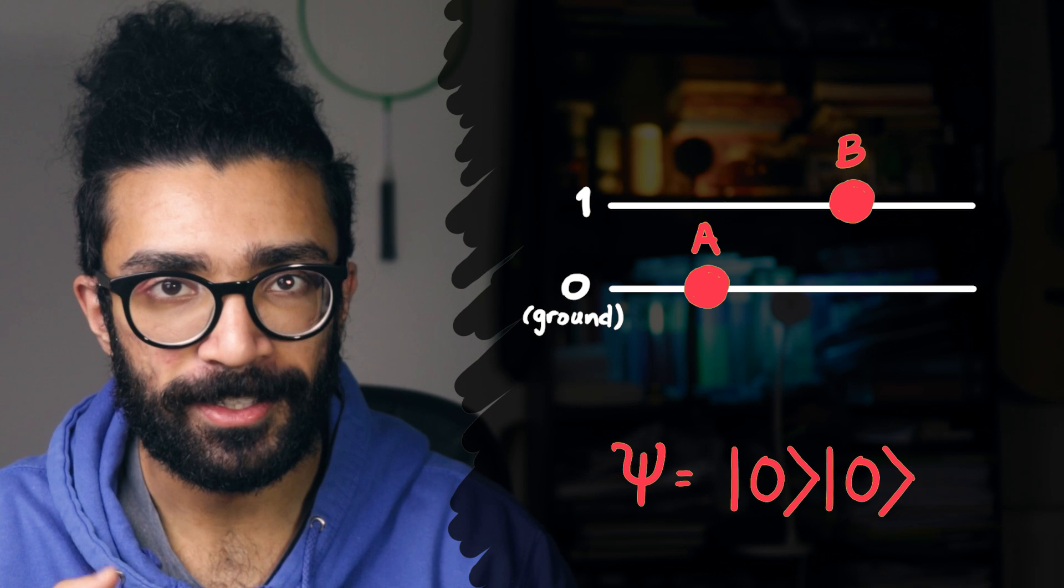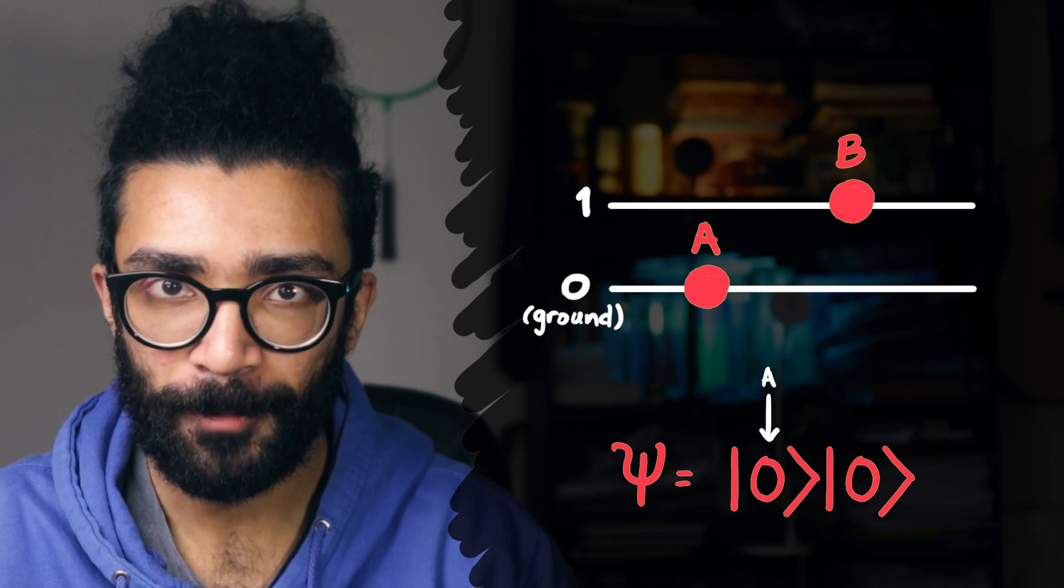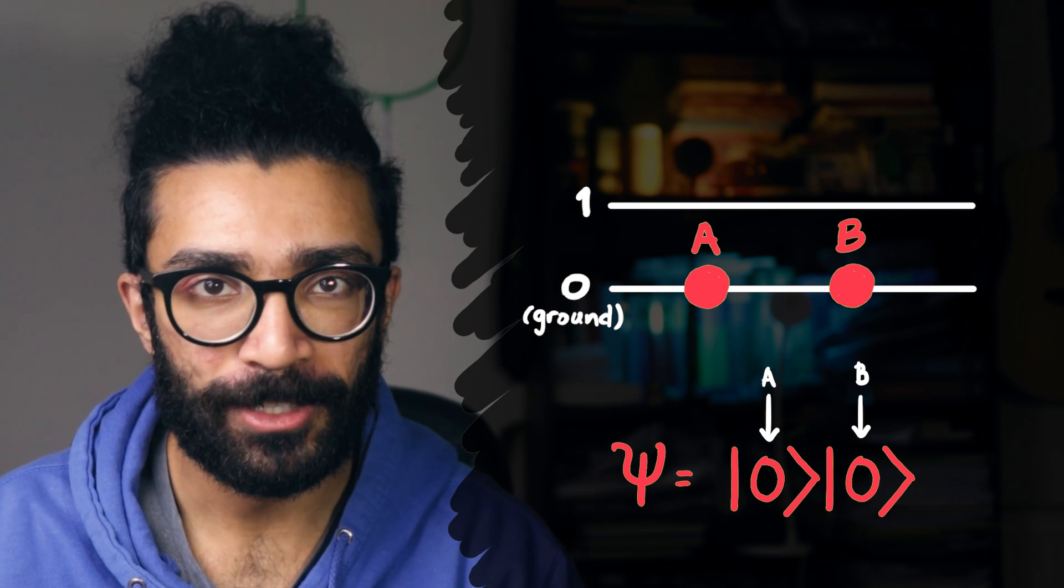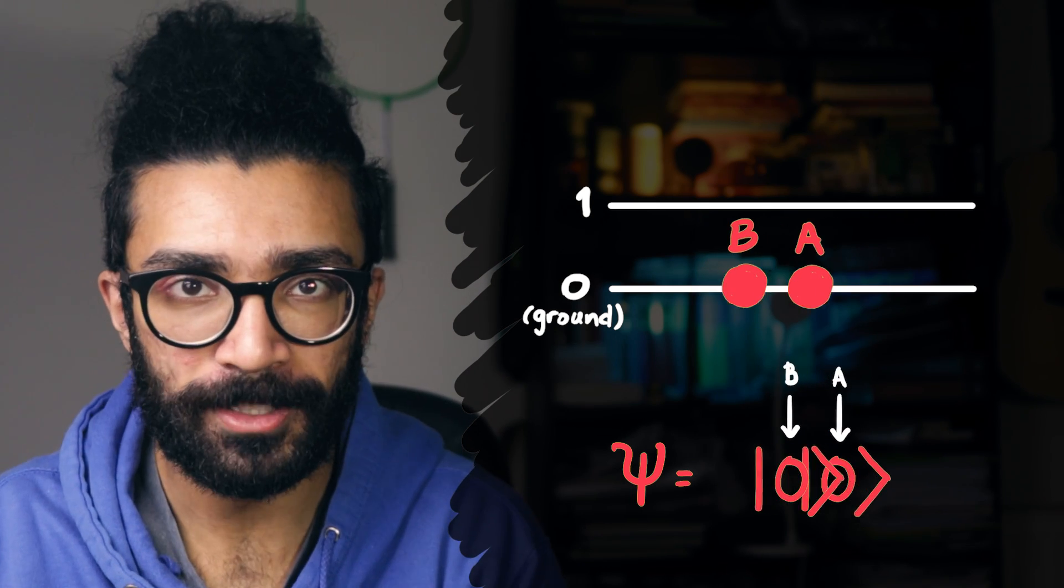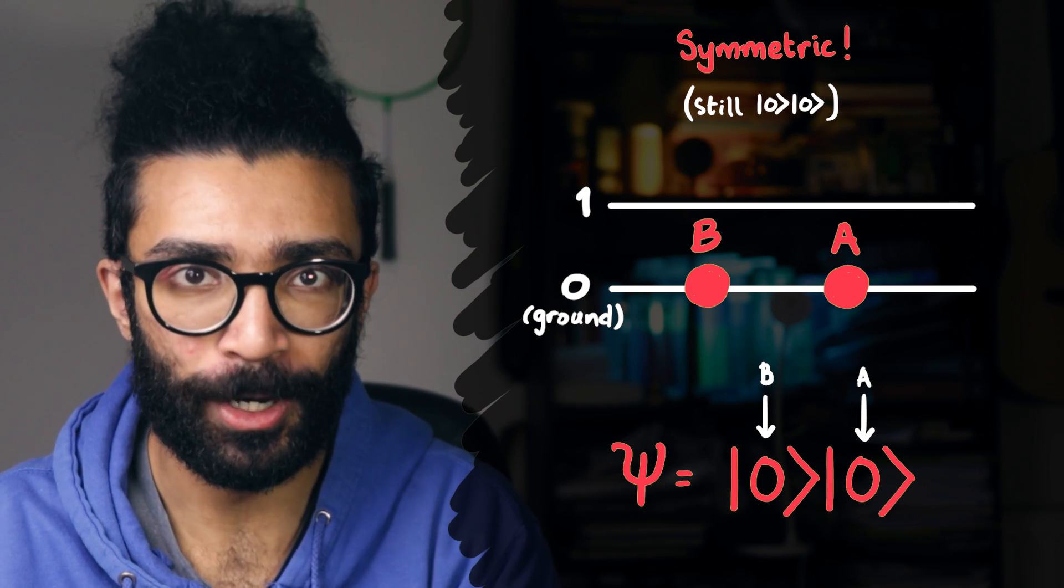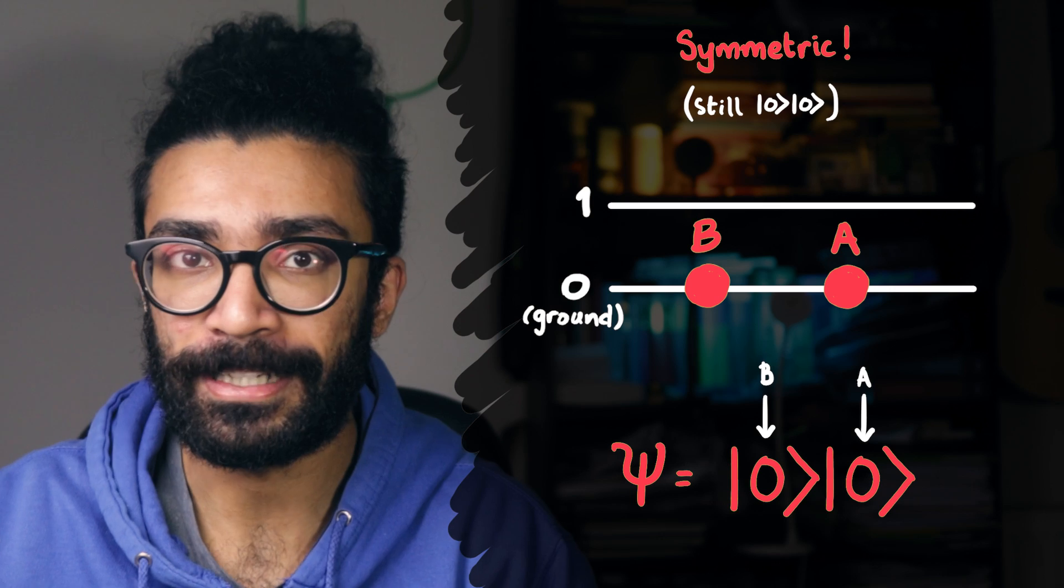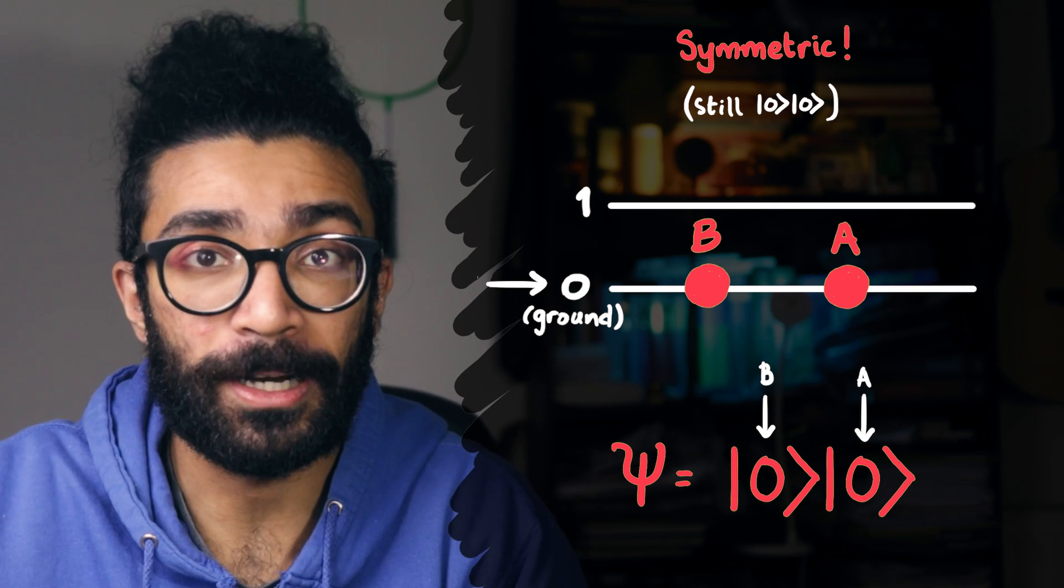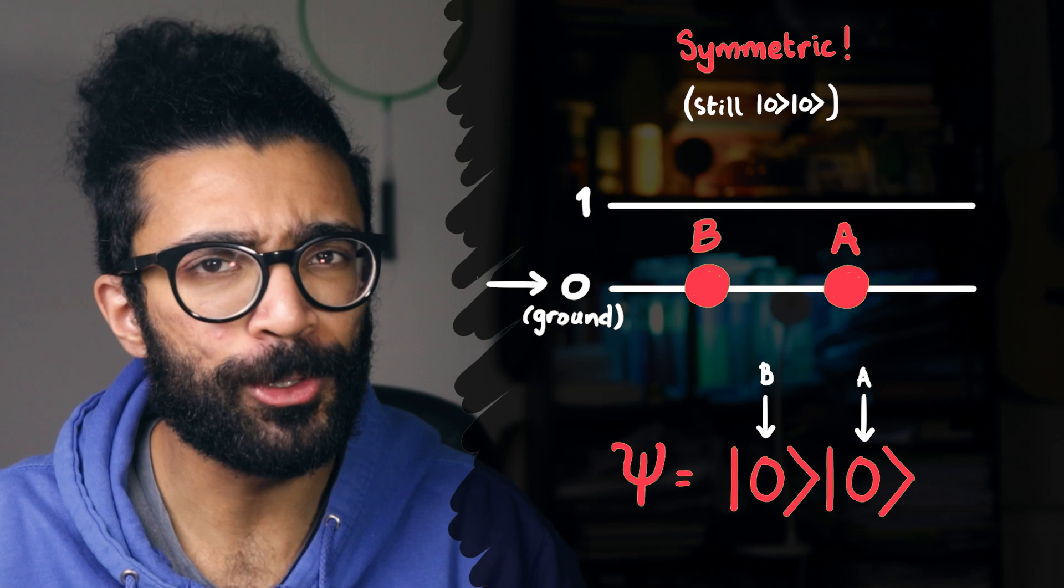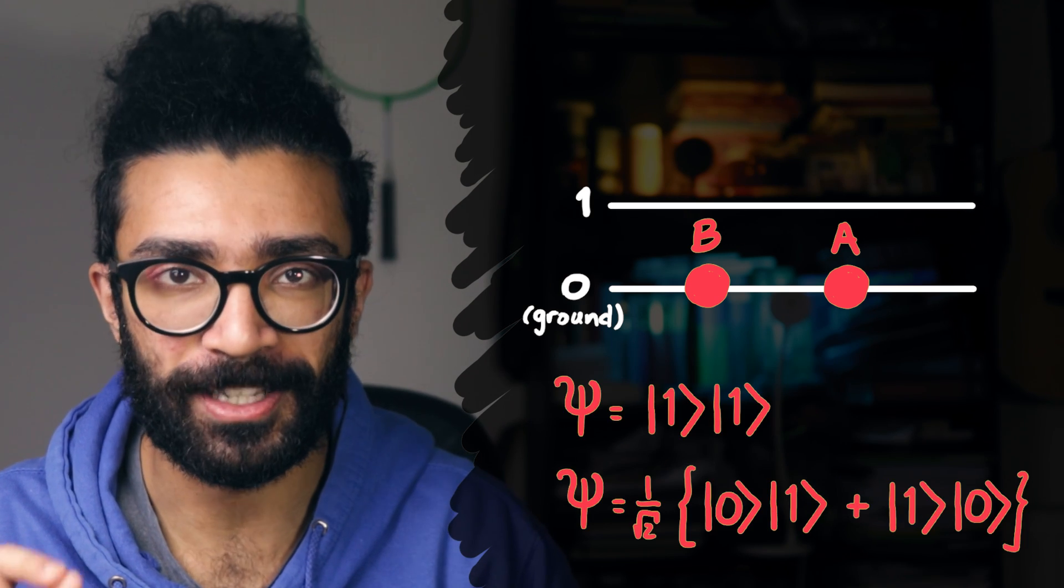If this is our system, we can work out what a possible wave function would look like for our system. It could, for example, look like this. What this represents is particle A in energy level 0, and particle B in energy level 0. This is indeed a symmetric wave function when we swap the particles, because the wave function remains exactly the same under particle exchange. And what this actually means is that if our two particles are indeed bosons, they can occupy the same state. As it turns out, for this particular system, there are also two other wave functions that we could construct. They look like this, but we will take a look at those in a moment.